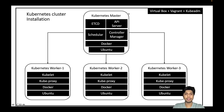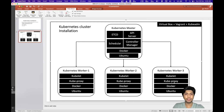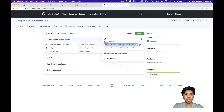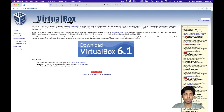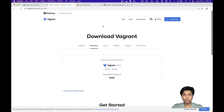Hello viewers. Today we are going to install a Kubernetes cluster using VirtualBox, Vagrant, and kubeadm. The cluster will have one master node and three worker nodes. To follow this demo, you need to install VirtualBox from virtualbox.org — the current version is 6.1. You also need Vagrant; the current version is 2.2.19.